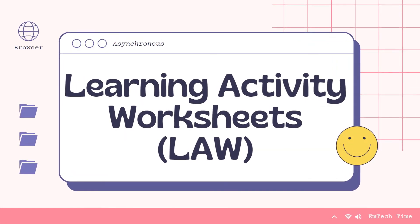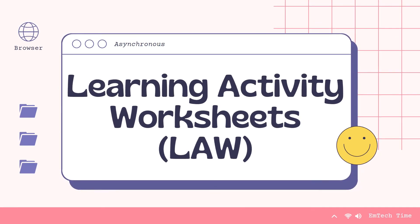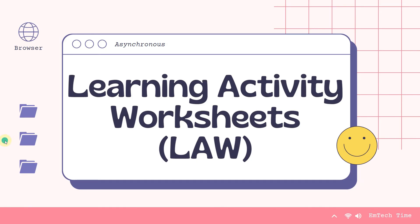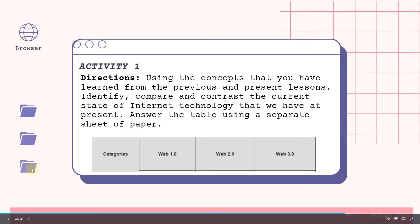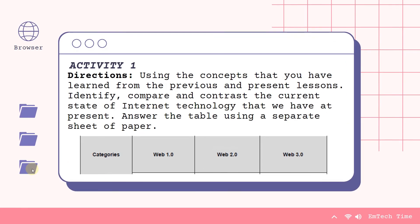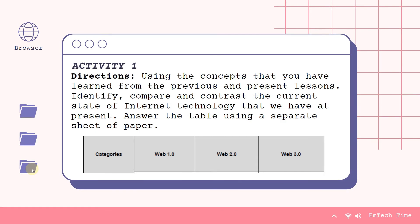Now let's answer our learning activity worksheets asynchronously. Activity 1 directions: Using the concepts learned from previous and present lessons, identify, compare, and contrast the current state of internet technology. Answer the table using a separate sheet of paper or directly on the worksheet given. The categories cover Web 1.0, 2.0, and 3.0 with key features, examples, advantages, and disadvantages.